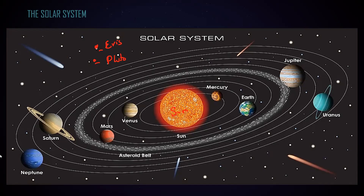The main planets are Mercury, Venus, Earth, Mars, Jupiter, Saturn, Uranus, and Neptune. Some stellar objects revolve around these planets — we call them moons. Any stellar object which orbits a planet, moving around it, is called a moon. Different planets have different natural satellites, and the term 'moon' is commonly used for them.